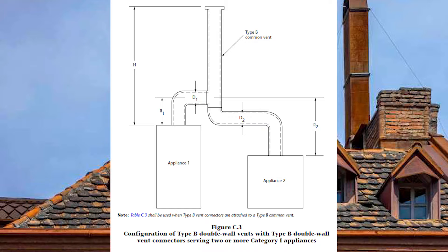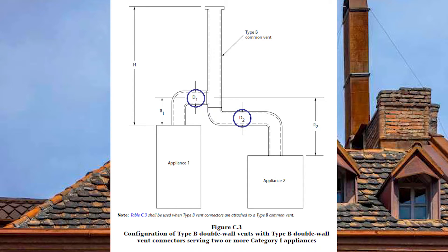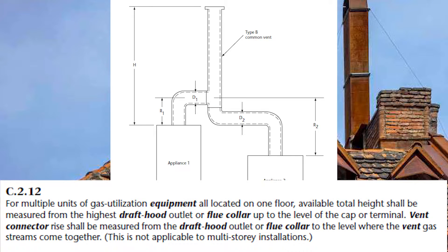Turning to pages 228 and 229 in the codebook we find clarifying pictures. Focus on page 228: figure C3, which references table C3. Notice we have two appliances. We have measurement H, which is the vent height; R1, the vent connector rise for appliance 1; and R2, the vent connector rise for appliance 2, plus the diameter for both. There is a special rule on measuring vent height from GVR C212: measure from the highest draft hood outlet or flue collar all the way out to outside air at the vent cap.